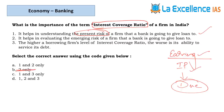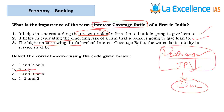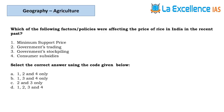Left with options A and D. Statement 3 — the higher a borrowing firm's ICR, the worse its ability to service debt. If the ratio is high, the firm can repay the loan; that means ability is good, not worse. So statement 3 is wrong; answer is A.